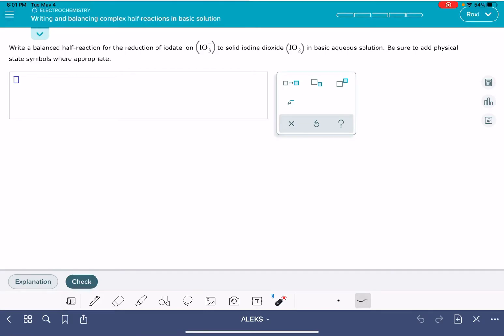In this video, I'll show you how to solve the ALEKS problem called Writing and Balancing Complex Half Reactions in Basic Solution. This problem tells us that we are starting with the iodate ion, IO3-, and notice here that ALEKS says we have to add physical states where appropriate.